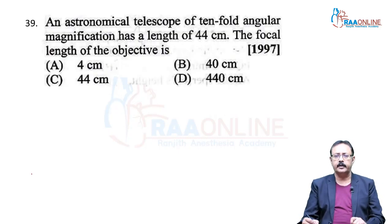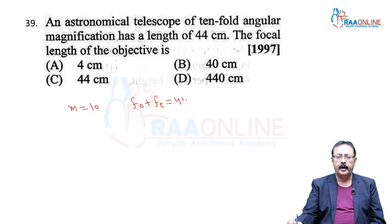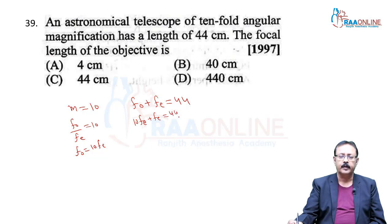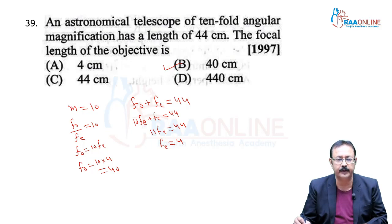Problem 39, from 1997 AIPMT. An astronomical telescope has 10-fold angular magnification and a tube length of 44 cm. Length = F_objective + F_eyepiece, magnification = F_objective / F_eyepiece = 10, so F_objective = 10×F_eyepiece. Then 10F_e + F_e = 44, so 11F_e = 44, F_e = 4 cm, F_objective = 40 cm. We go with option D.